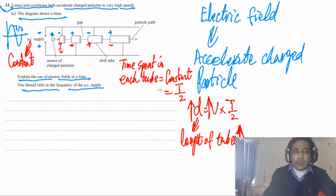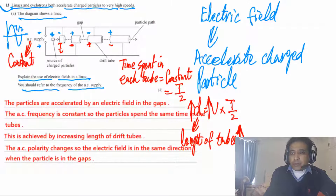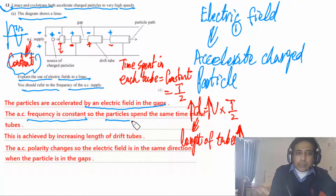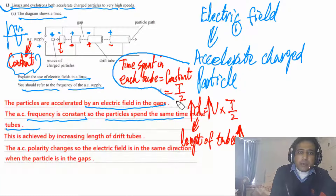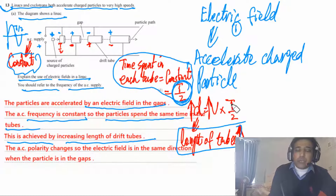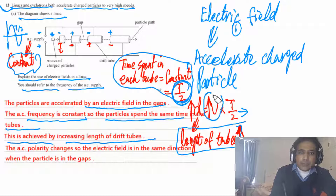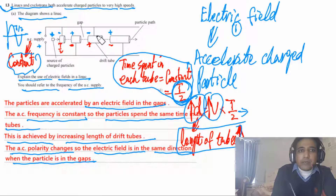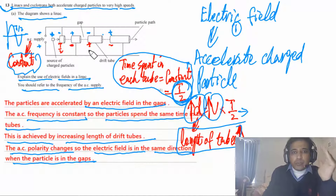To summarize the linac answer: particles are accelerated by an electric field in the gaps. AC frequency is constant, so particles spend the same time (T/2) in each tube. As speed increases, tube length must increase. The AC polarity changes so the electric field is always in the same direction when the particle is in the gap.